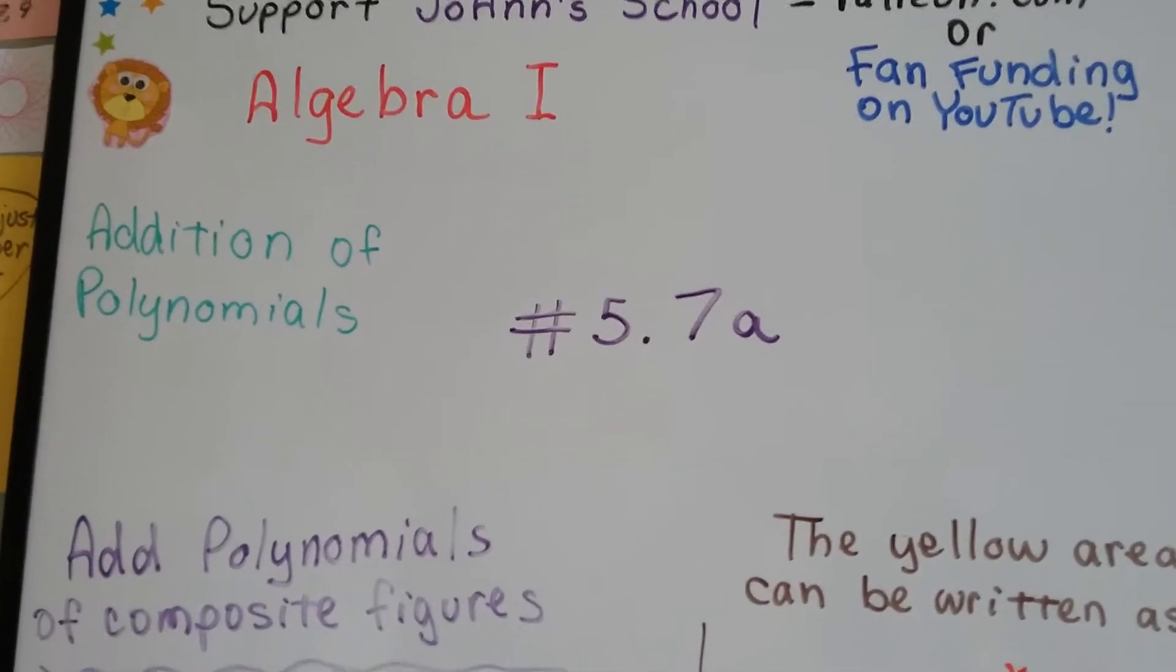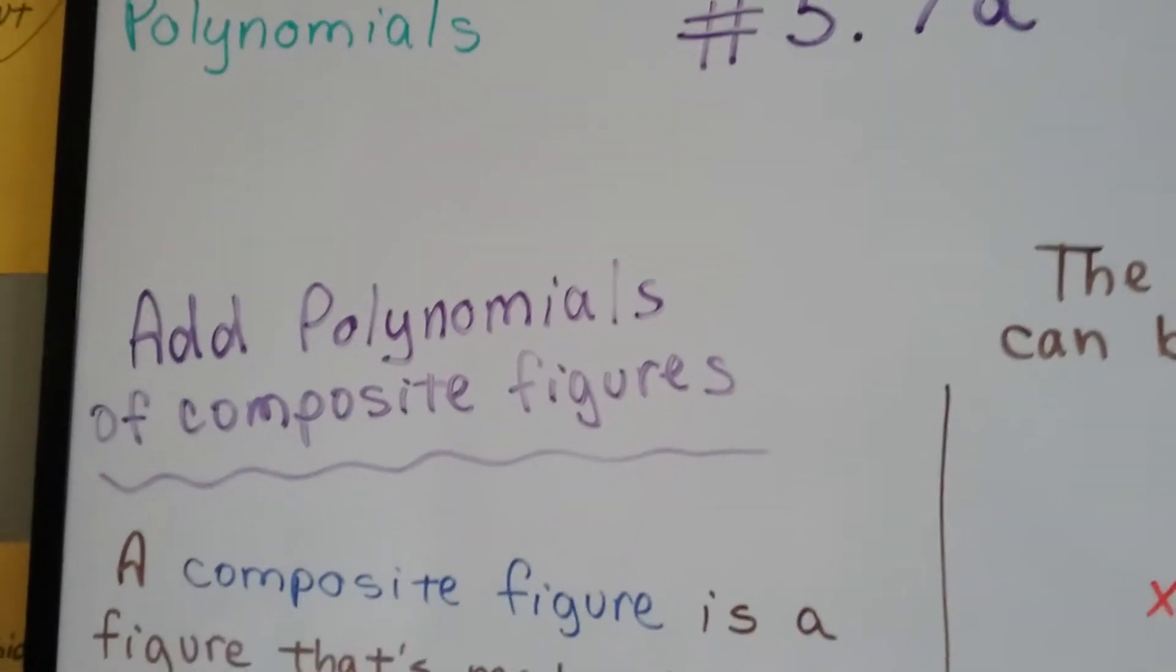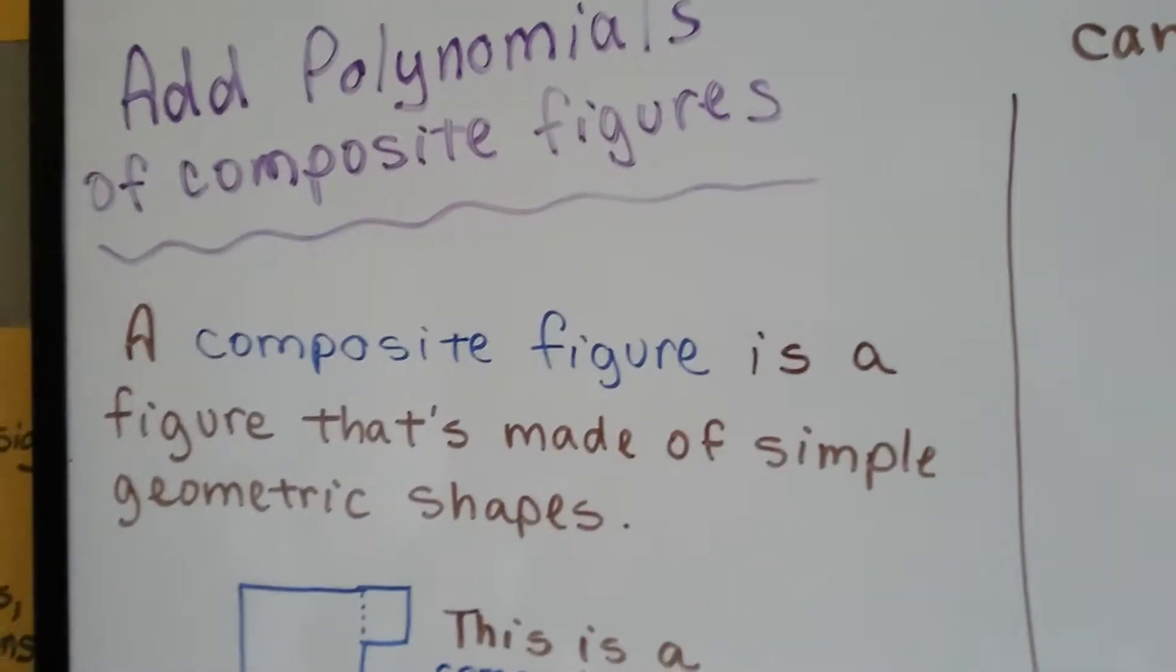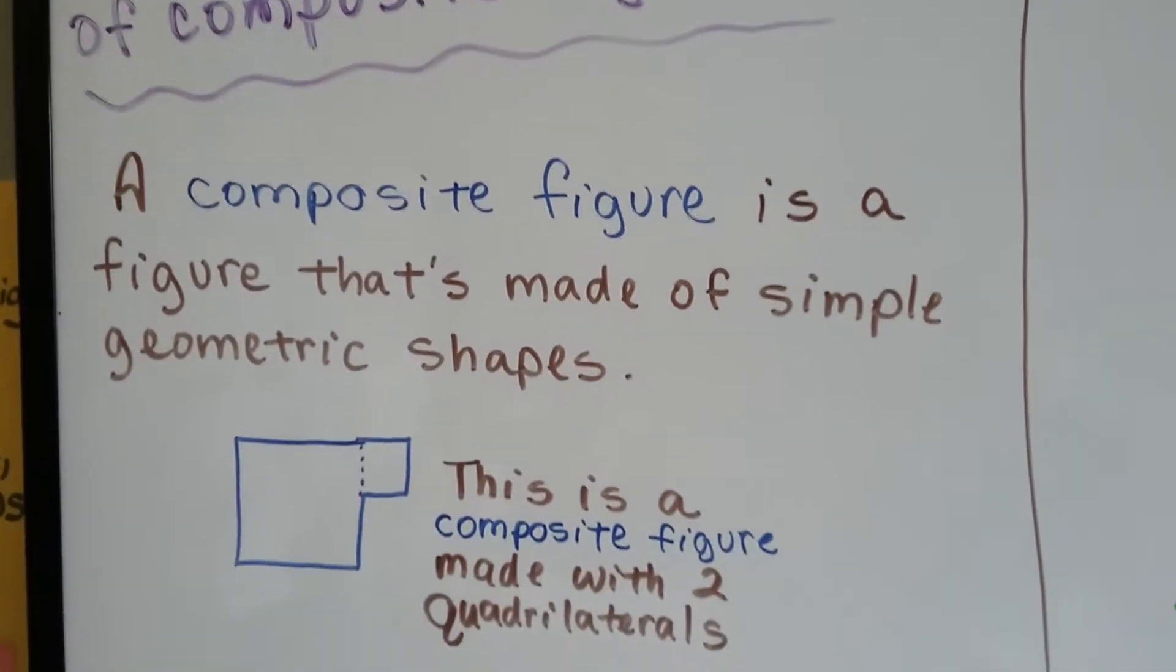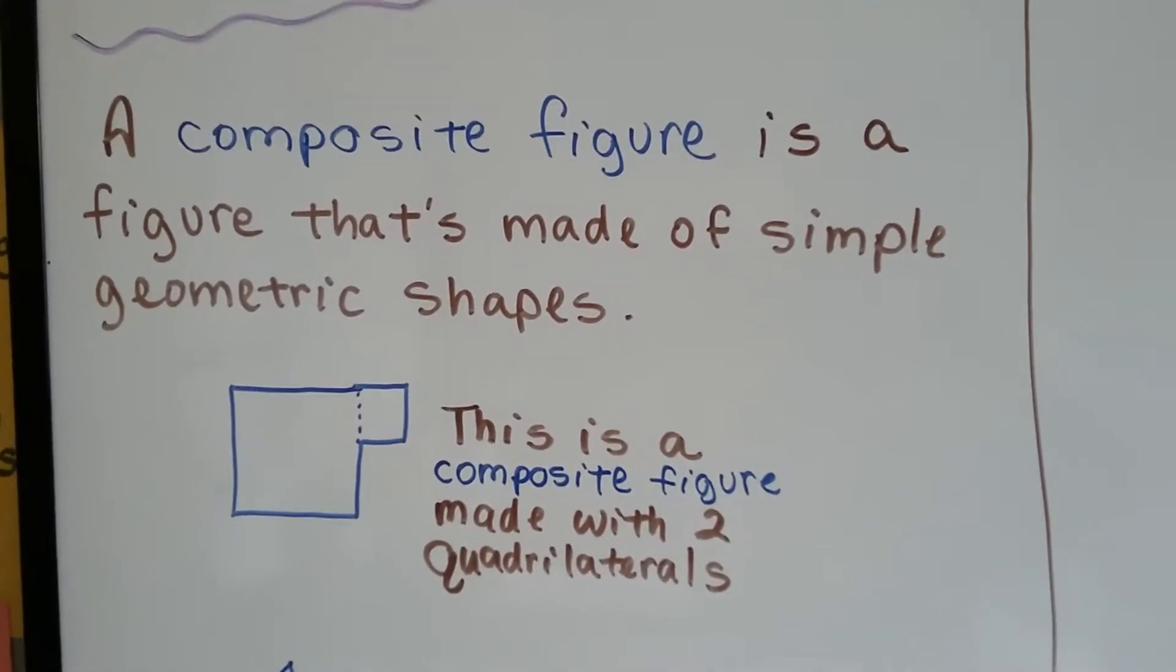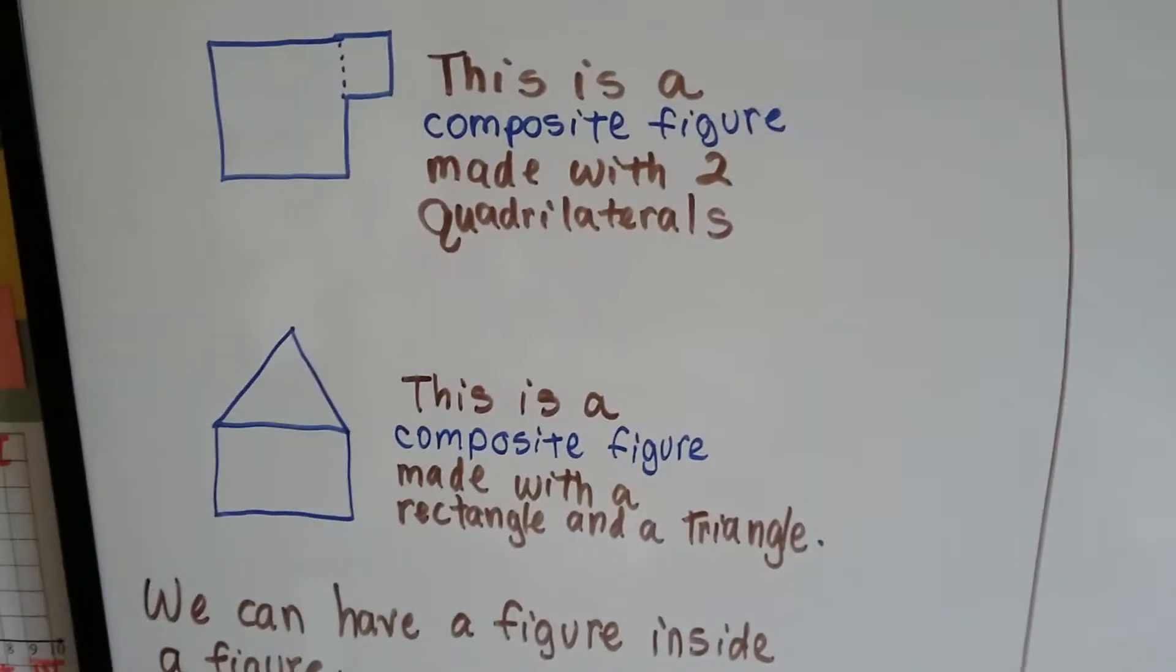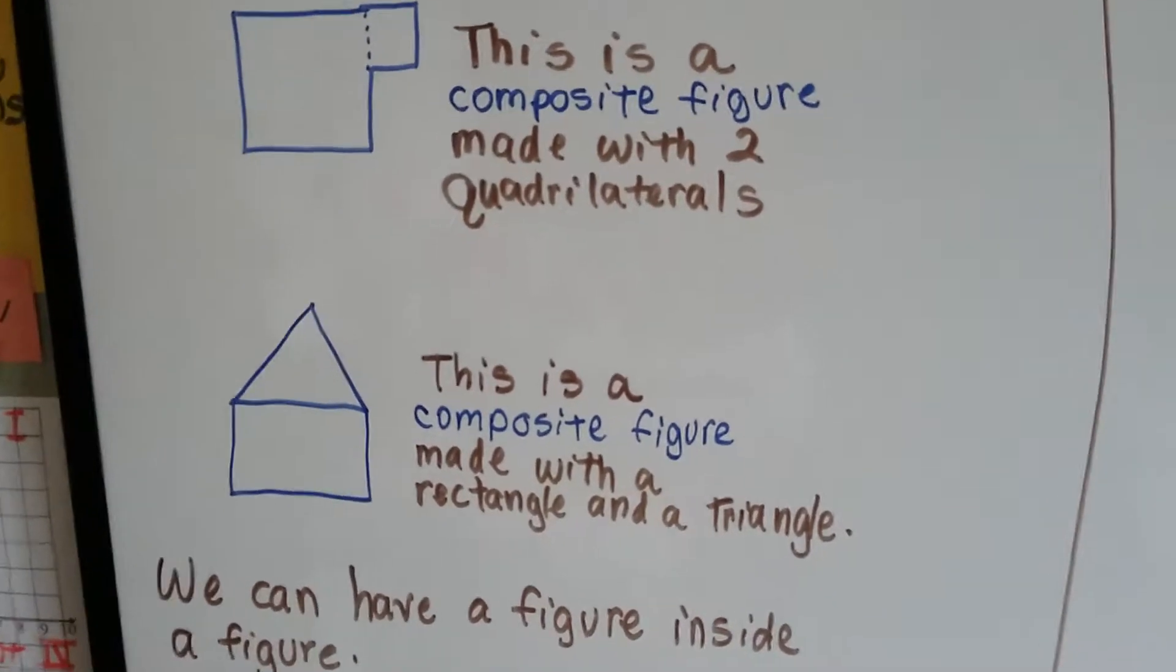Algebra 1 number 5.7a, this is add polynomials of composite figures. A composite figure is a figure that's made up of simple geometric shapes, like this one's made with two quadrilaterals. You can see the little bump of the second one sticking out. This is a composite figure with a rectangle and a triangle.